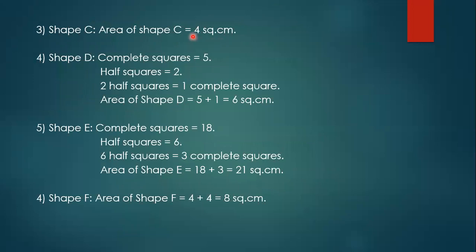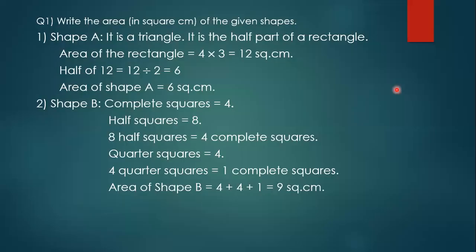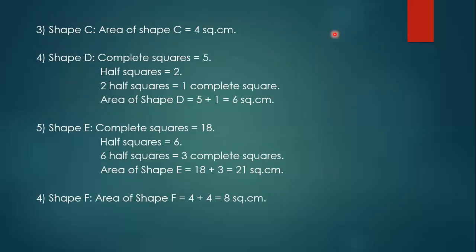Now we will see shape D. How many complete squares are there? 1, 2, 3, 4, 5 — 5 complete squares. And here 1 half square, and here another 1 half square, so 2 half squares in total. 2 half squares means 1 complete square. So total area is 5 + 1 = 6 square centimeters.